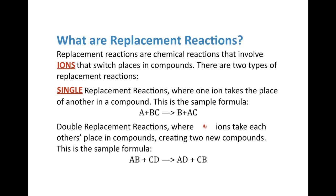You can also have two ions switch places — that's a double replacement reaction. The formula is AB plus CD yields AD plus CB. As you can see, B and D swap places with each other: where it was AB before, now it's AD; where it was CD before, it's now CB.